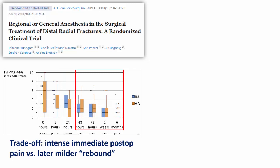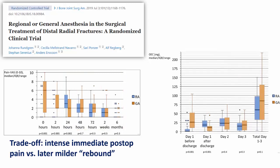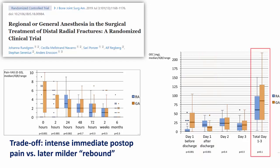When we look at opioid consumption, however, this is where we see the benefit. Although there was a small bump up in opioid use on day one following discharge, it was small and opioid requirements were essentially similar thereafter, with the total amount over the first three days being significantly lower in the regional group.